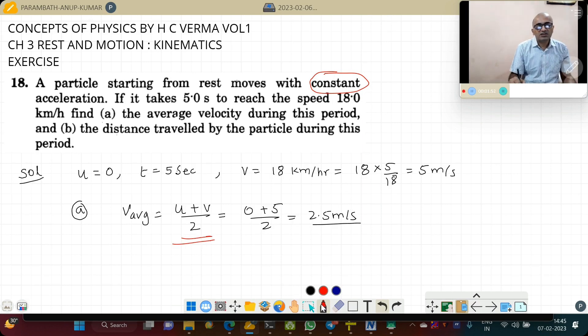So now coming to the next part of the question, part b, find the distance traveled by the particle during this period. So we can directly apply s equals v_avg into time, that is 2.5 meter per second into 5 seconds, that is 12.5 meters.